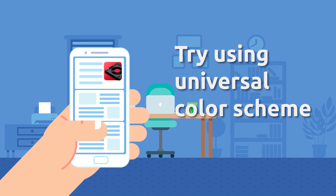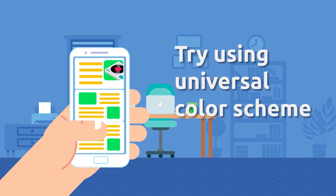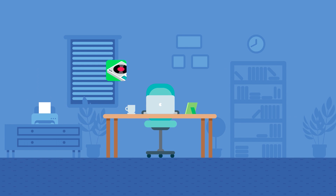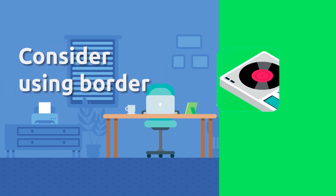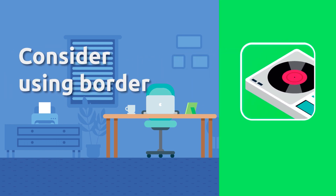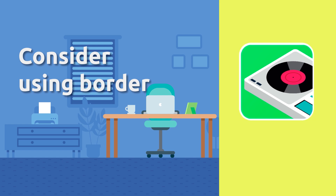Try using a universal color scheme. This will make sure your icon and your app design will look consistent. Consider using a border — adding a thin borderline can help your app icon stand out on any background.